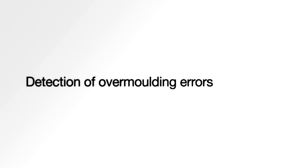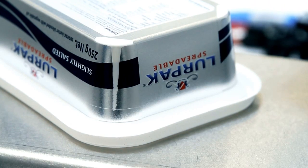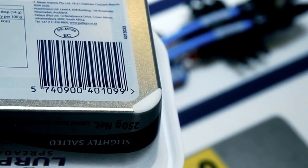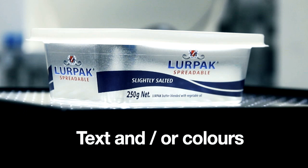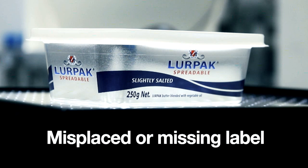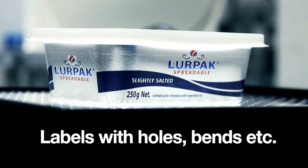You get detection of overmolding errors in assemblies and corners, control of barcode, detection of artwork errors such as wrong labels, variations in text or colors, labels misplaced or missing, labels with holes, bends, etc.